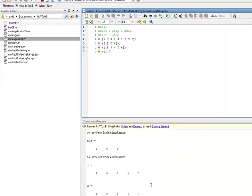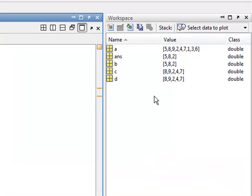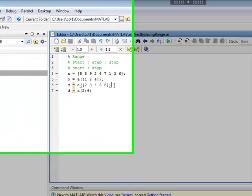Well, we get C and D are the same because they're indexing, you can go over here to the workspace. They're indexing at the second, third, fourth, fifth, and sixth. So second, third, fourth, fifth, and six. So this is eight, nine, two, four, seven, which is what we got here. So there we go.